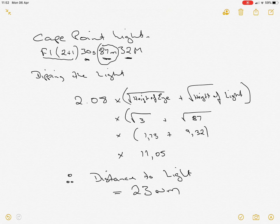So we first need to take the square root of the height of our eye. In other words, how high above the water level is our actual eye. We then also take the height of the light which we have determined is 87 meters.